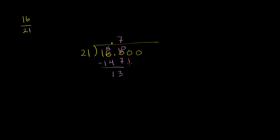Now let's bring down a 0. 21 goes into 130. So let's see, would 6 work? It looks like 6 would work. 6 times 21 is 126, so that looks like it works. So let's put a 6 there. 6 times 1 is 6, 6 times 2 is 12. There's a little bit of an art to this.